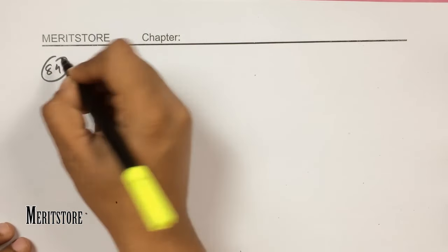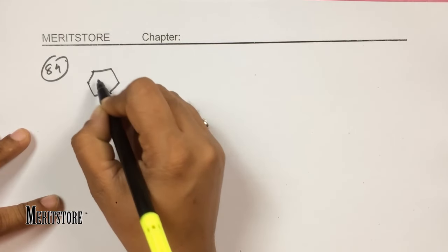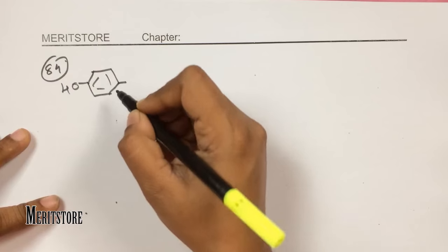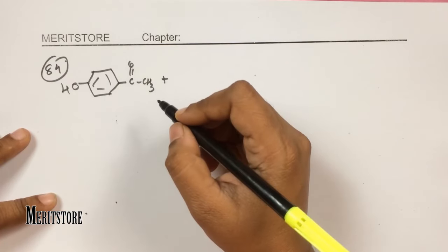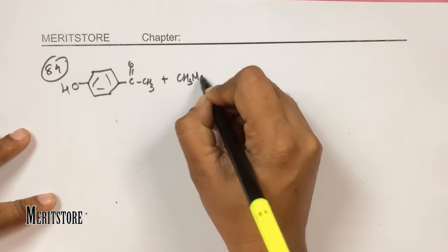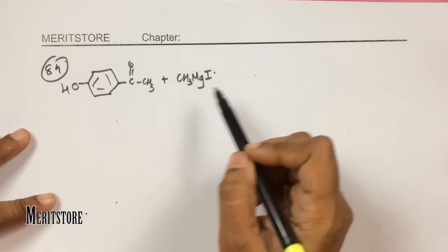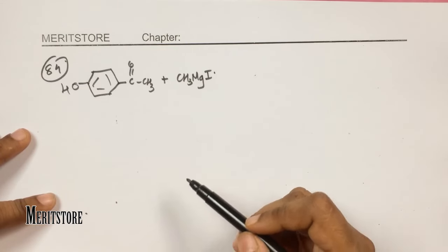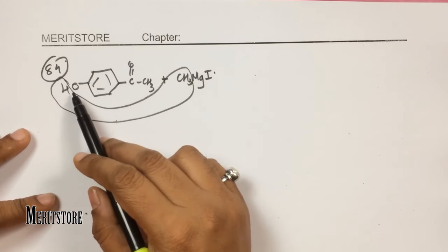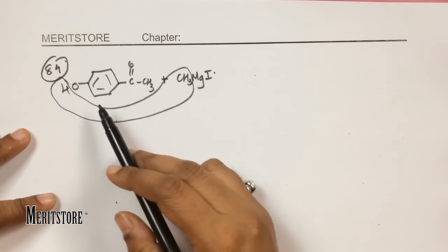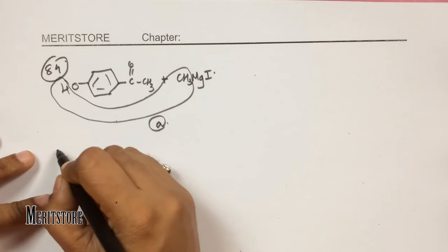Question number 84: para-hydroxyacetophenone (with an OH group and a C=O CH₃ group) reacts with methyl magnesium iodide. The Grignard reagent reacts with the OH group, resulting in the formation of a magnesium iodide salt and loss of methane. Option A.